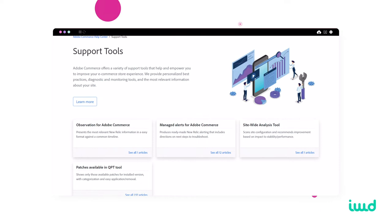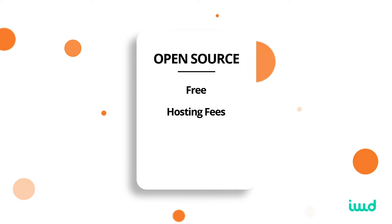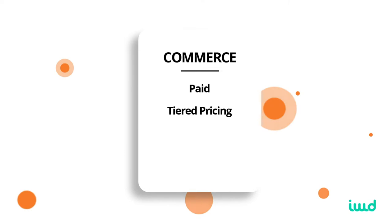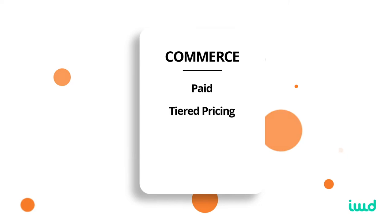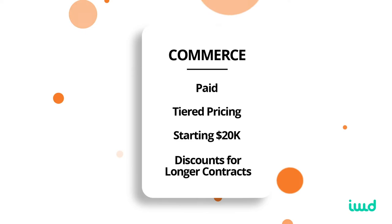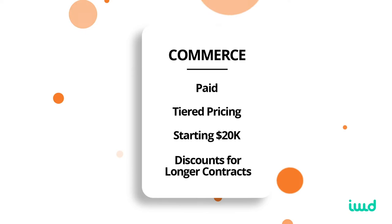Let's talk about pricing. The open source version is completely free to use — you will have to pay for hosting. The commerce version is the paid version, and pricing varies depending on how large of a merchant you are. For example, Walmart's Adobe Commerce solution will be a lot more expensive than a small retailer. It starts around $20,000 and goes up from there. If you sign a longer contract with Adobe Commerce, they'll also give you a discount. At IWD Agency, we have a rebate of up to $30,000 that can go toward your licensing costs for Adobe Commerce.